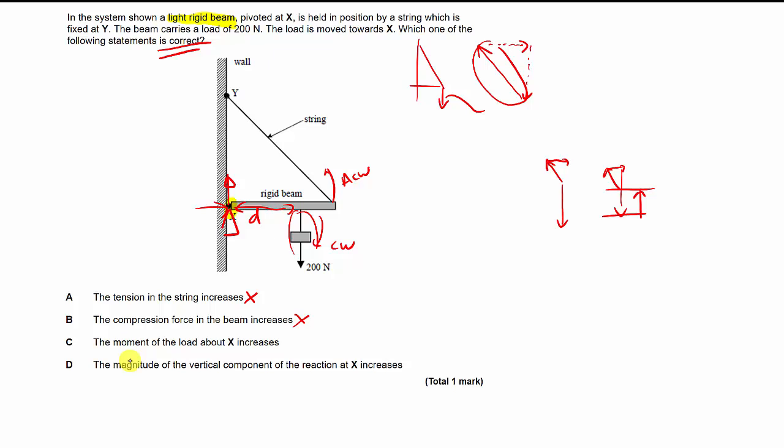The moment of the load about X increases. Well, that's clearly wrong as this gets smaller. And the clockwise moment will definitely get smaller. So, this leaves us only with this as being correct. But still, let's check it. The magnitude of the vertical component of the reaction at X increases. Well, what are we talking about? We're talking about the same thing we were just talking about there.